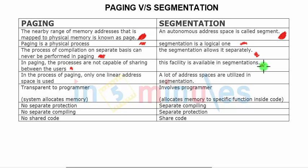In paging, processes are not capable of sharing between users. Whereas in segmentation, the facility of sharing is available because of the common address space with targeting and the logical address space which they have.